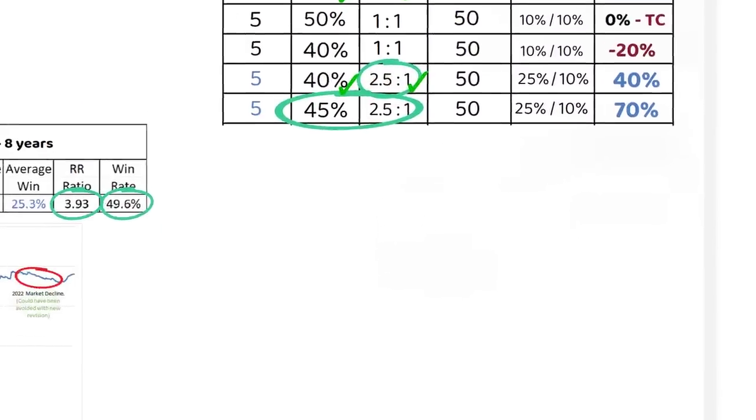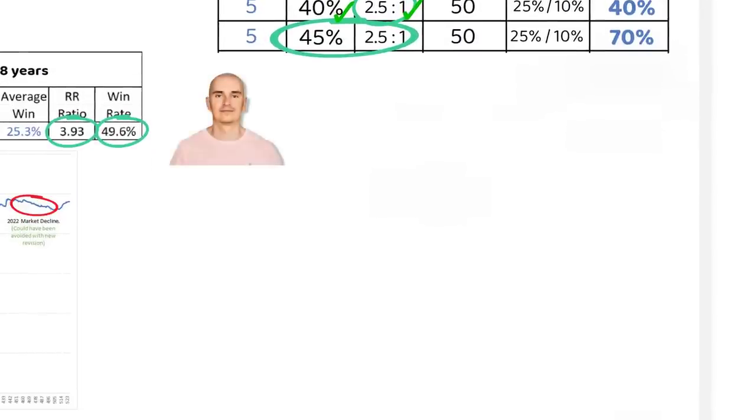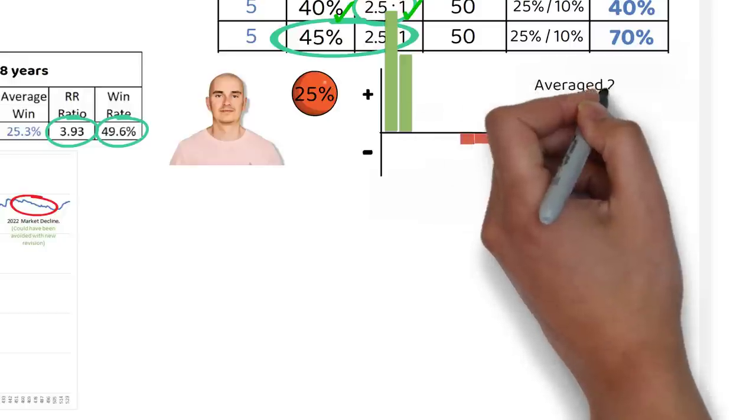For example, legendary trader Christian Kulamagi, whom we covered in a previous video, maintains a low success rate of near 25%, but the winners far outpace the losers, therefore helping him create three-digit percentage returns on overall capital.